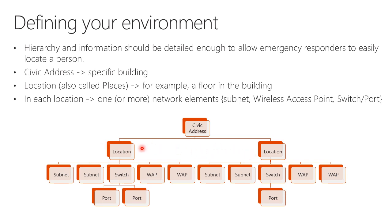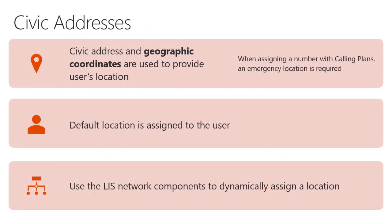Inside those locations, we can have one or more network elements for more granular identification: a simple IP subnet, a wireless access point the user is connected to, or a switch and/or switch port. The civic address at the top of the hierarchy includes the street address, city, state, and zip code, plus geographic coordinates — latitude and longitude — used to provide the user's location.